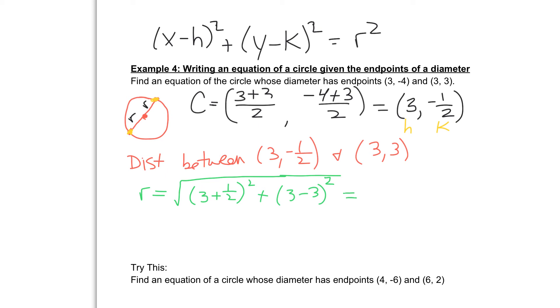If I simplify this, I get the square root of 12.25. And then for my equation, I need r to be squared. So I'm going to take this and I'm going to square it, which gives me r squared equal to 12.25.